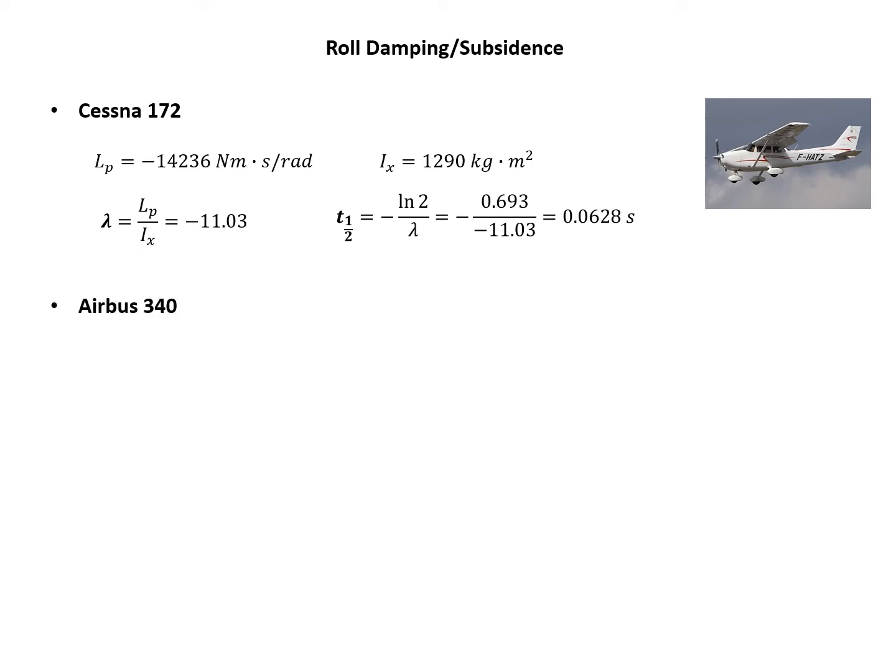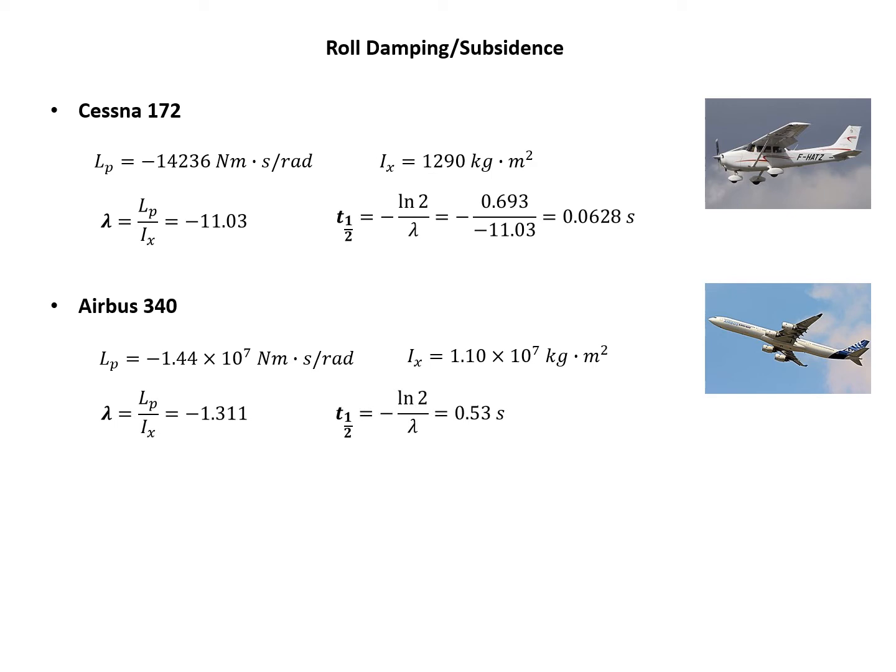In contrast, let's see the Airbus A340, a four engine passenger aircraft. It has Lp again negative, and moment of inertia much larger value, 10 to the power of 7. Lambda is minus 1.311, and the time to half amplitude is 0.53 seconds. Although it's much larger, about 10 times the Cessna 172, it's still quite small, less than 1 second. This roll damping mode is heavily damped and non-oscillatory.